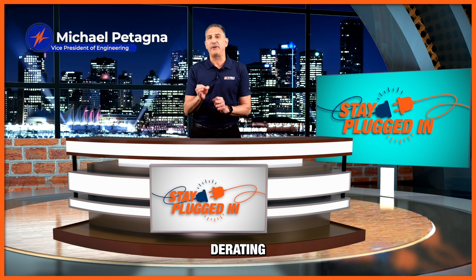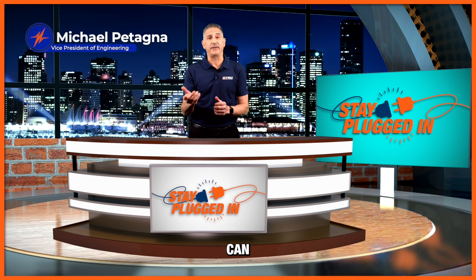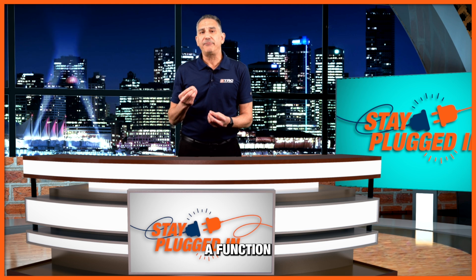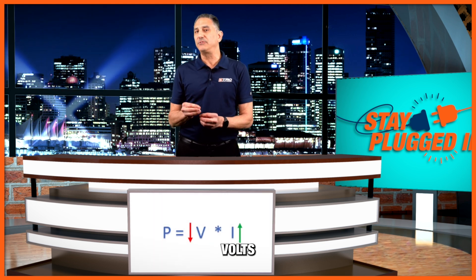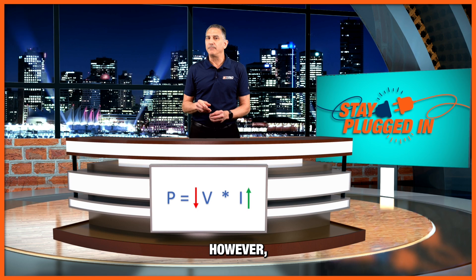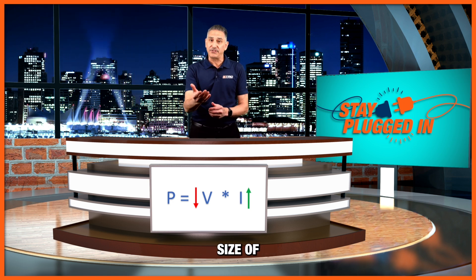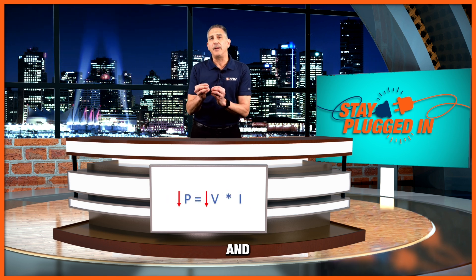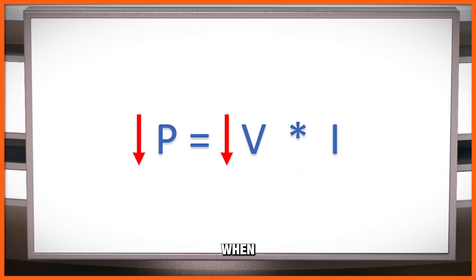The reason why input derating is necessary is a function of the classic power equation: power equals volts times amps. When your input voltage goes down, the input current would go up to keep the power the same. However, the current is going to be limited by the size of the wires and the traces on the input part of that power supply. So to keep the same current and prevent those wires and traces from overheating, when the input voltage is lowered, the maximum power rating is reduced as a function of that lower input voltage.